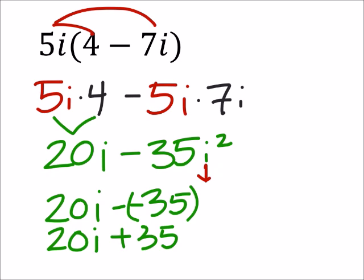Not everyone would need all these steps, by the way. Now this is not in the form a plus bi, because I have the i term in the front, or it's in the leading position. So I can just use the commutative property to switch these around. So that would make this 35, and then I had a positive 20i.